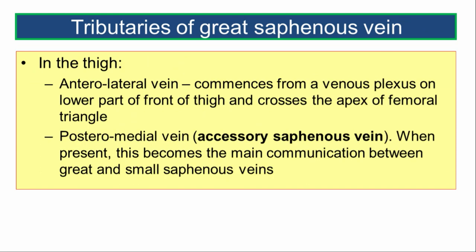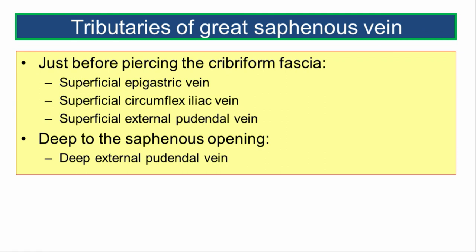In the thigh, the anterolateral vein commences from a venous plexus on the lower part of the front of the thigh and crosses the apex of the femoral triangle before draining into the great saphenous vein. The posteromedial vein, also known as the accessory saphenous vein, when present, becomes the main communication between the great and the small saphenous veins.